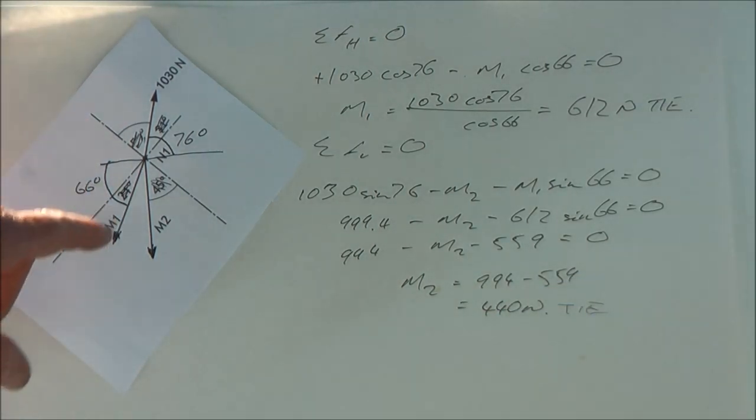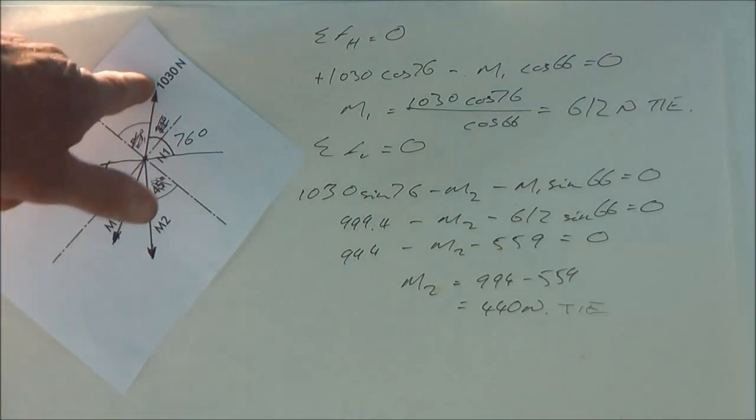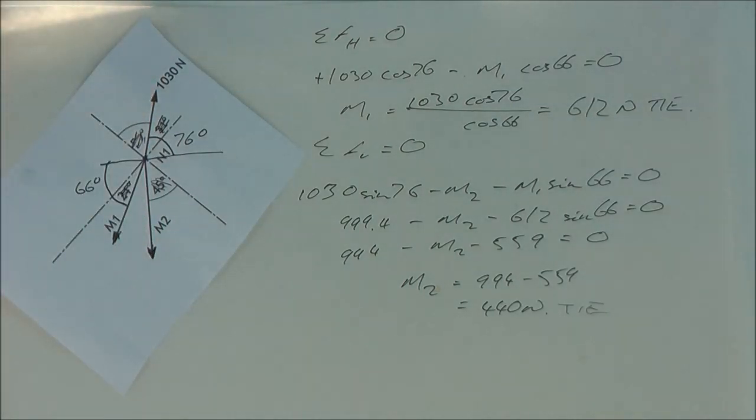So the second method, to summarize it: you twist it around so one of the forces is in either the horizontal or the vertical direction. Here, we put M2 into the vertical direction. We could equally put it into a horizontal direction. So twist it around, get your new angles to the horizontal and vertical, and then away you go. Method two is the way to do it. Takes no time at all.